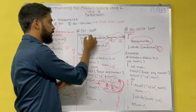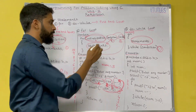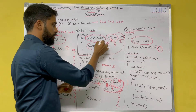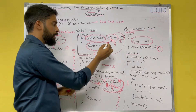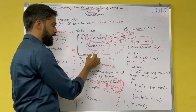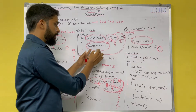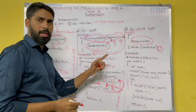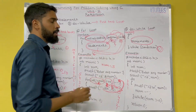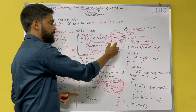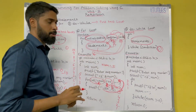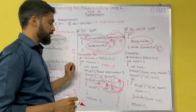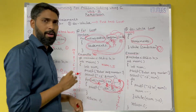In the for loop, you first initialize, then check the condition. If the condition is true, you execute the statements and enter the block; otherwise you exit. After execution of the statements, you update with increment or decrement and again go back to the condition. If the condition is true, execute again; otherwise terminate the loop.